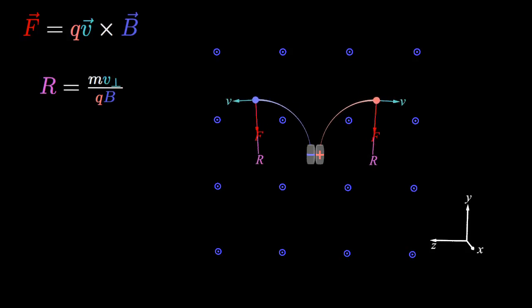The force on a negative charge will be reversed compared to a positive charge with the same velocity. As a result, positive and negative charges will traverse their circles in opposite directions.